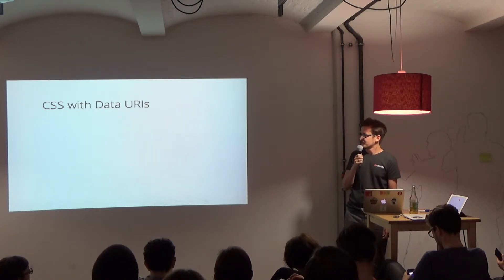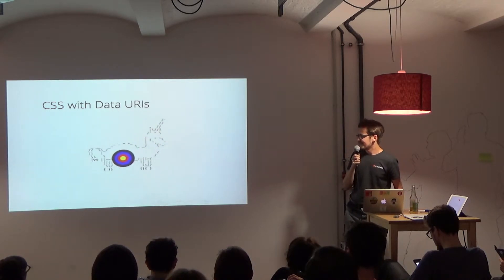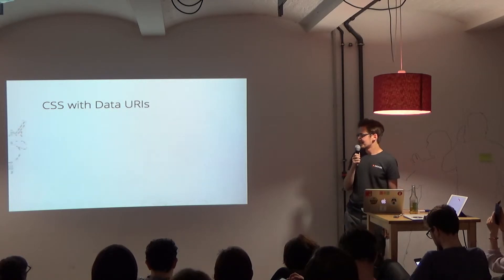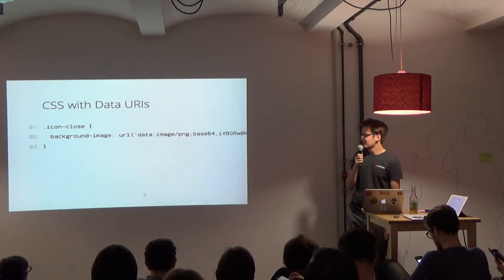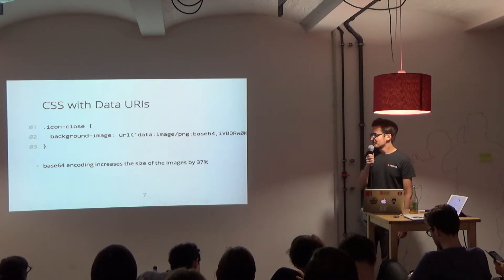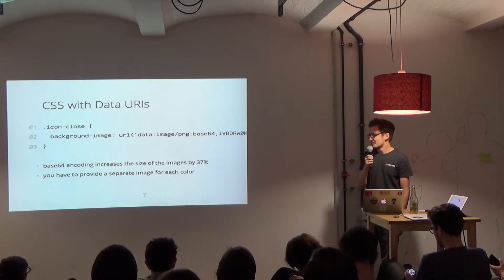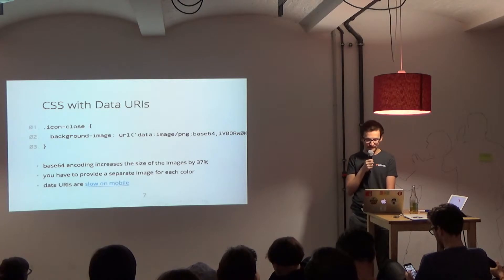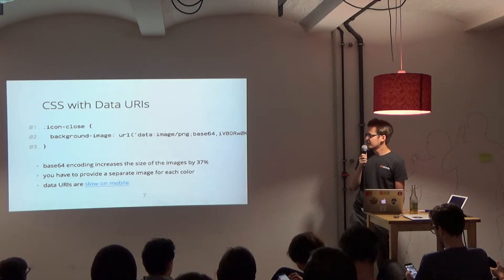The second method that came after CSS sprites is CSS with data URIs, popularized with Grunticon. They have this awesome website where you can drop SVGs and it will create CSS for you that bundles these images by encoding them into data URI format. But base64 encoding increases the size of the images, increasing the payload. And of course you have to provide a separate image for each color. Also, data URIs are really slow on mobile because every inclusion of an image through data URI actually hits the cache of the browser.